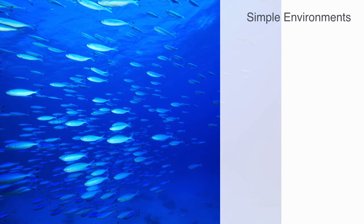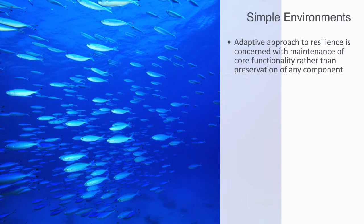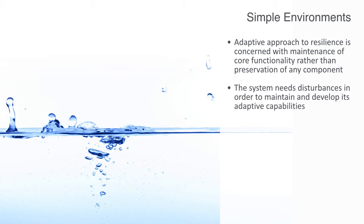As such, this adaptive approach to resilience is concerned with the maintenance of core functionality, rather than the preservation of specific system components, unlike in our previous model where we were trying to stamp out any small disturbance at its source. With adaptive resilience, we're saying quite the contrary, that the system needs disturbances in order to maintain and develop its adaptive capacities, which is ultimately the only thing that is going to ensure its long-term survival within a complex environment.